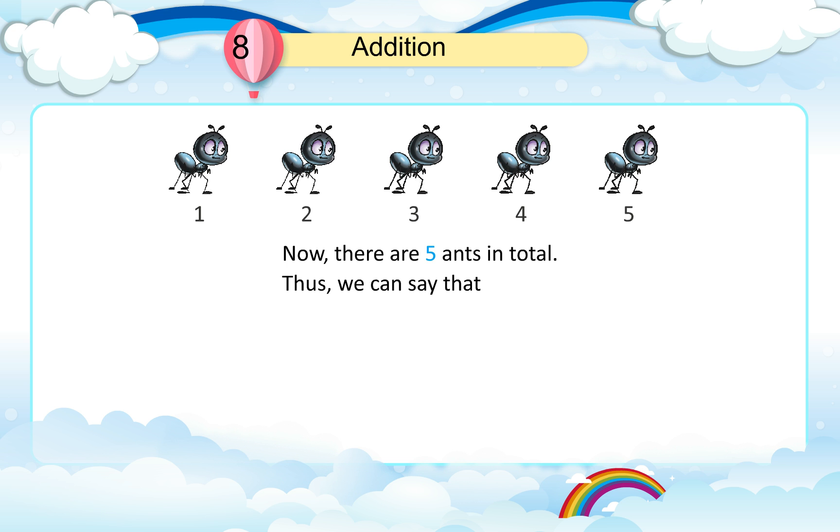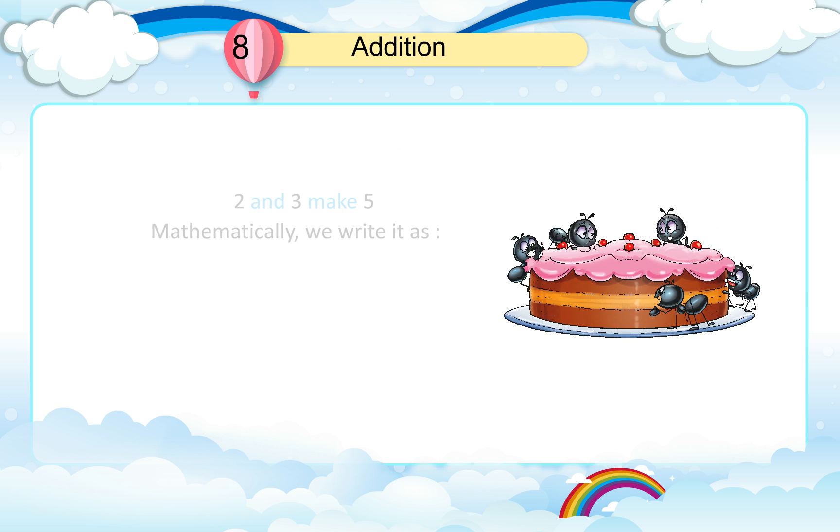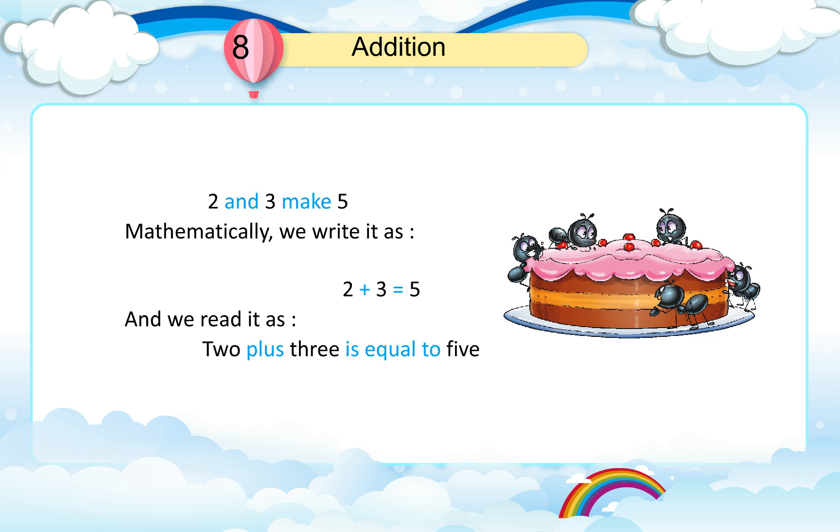Thus, we can say that 2 and 3 make 5. Mathematically, we write it as 2 plus 3 equals 5. And we read it as 2 plus 3 is equal to 5.